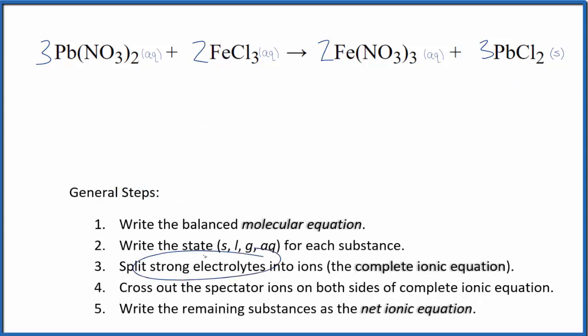But now that we have our states, we can split the strong electrolytes into their ions, and that gives us the complete ionic equation. So lead's a transition metal, but we do know that the nitrate is 1 minus. We have two of them. Lead has to be 2 plus. So we'll have three Pb 2+ ions. And plus 2 times 3 is 6 of these nitrate ions, 6 NO3- ions.